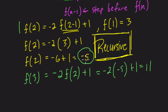So this function is jumping all over the place, which is kind of cool. And then, change colors again, f of 4, that's going to equal negative 2 times f of 4 minus 1, or f of 3, plus 1.